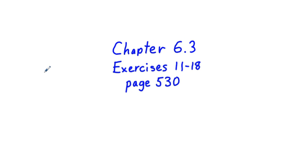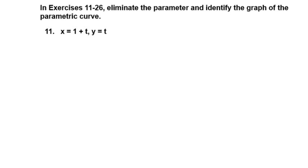Chapter 6.3, Exercises 11 through 18. This section of the book has to do with parametric equations, and we're going to do the first part of this exercise set covering problems 11 through 18. We're going to handle the four odd number problems: 11, 13, 15, 17. We're going to eliminate the parameter and identify the graph of the parametric curve.